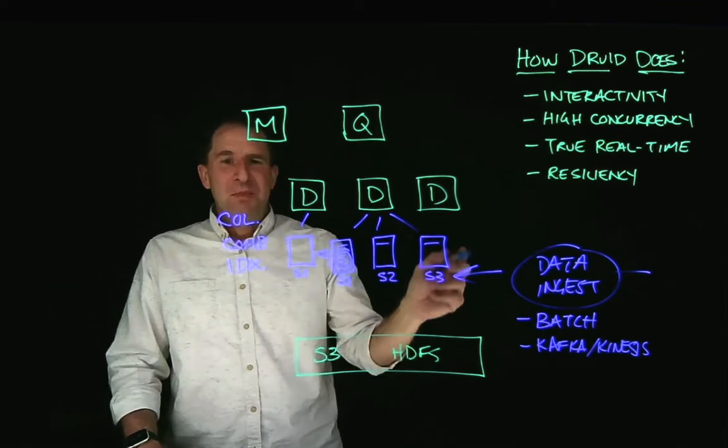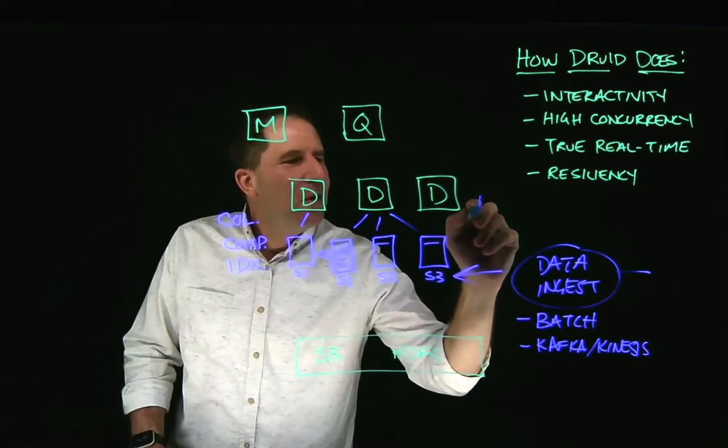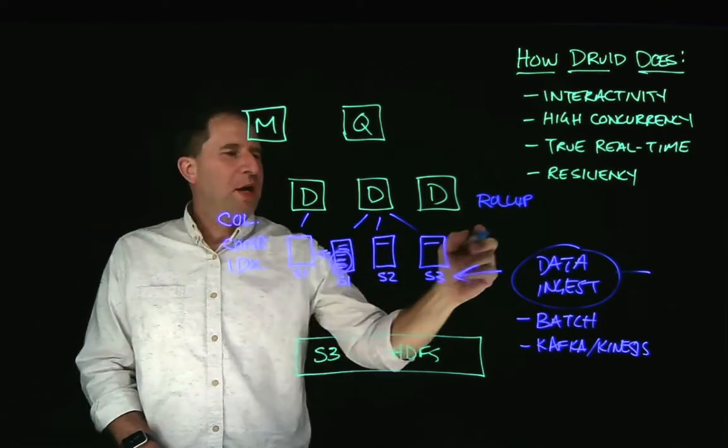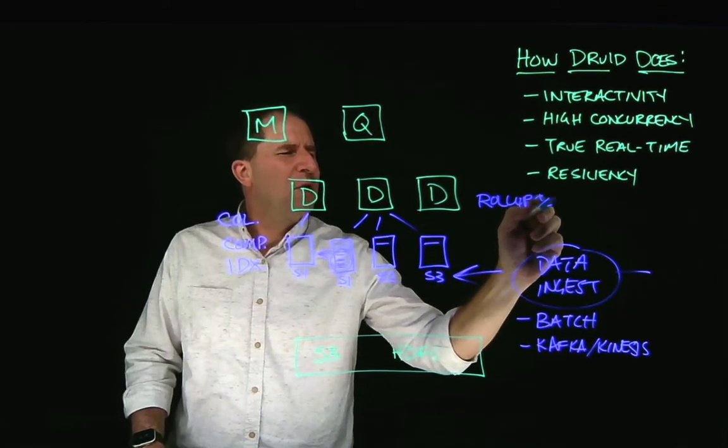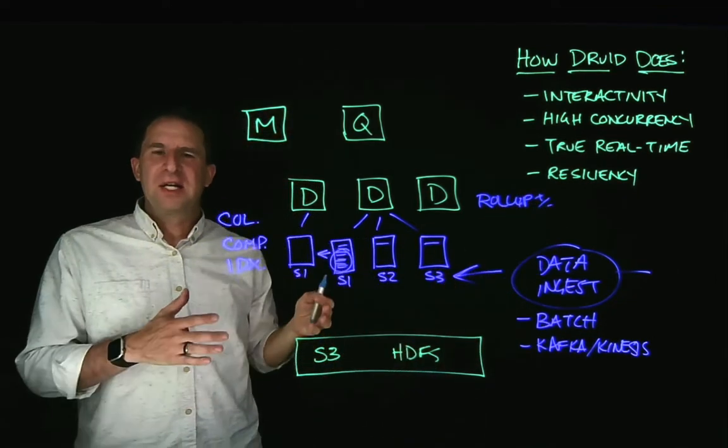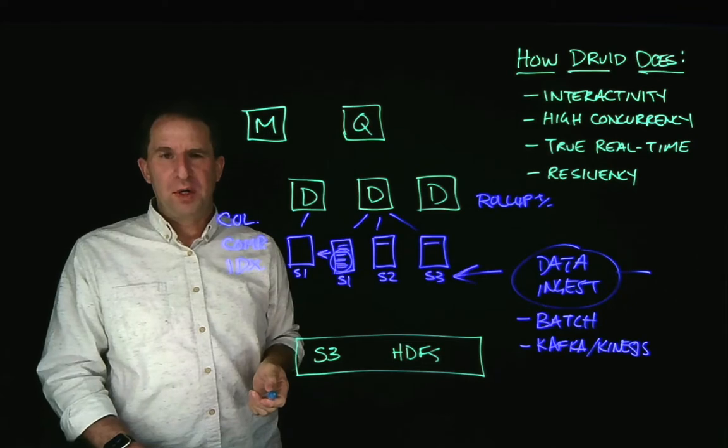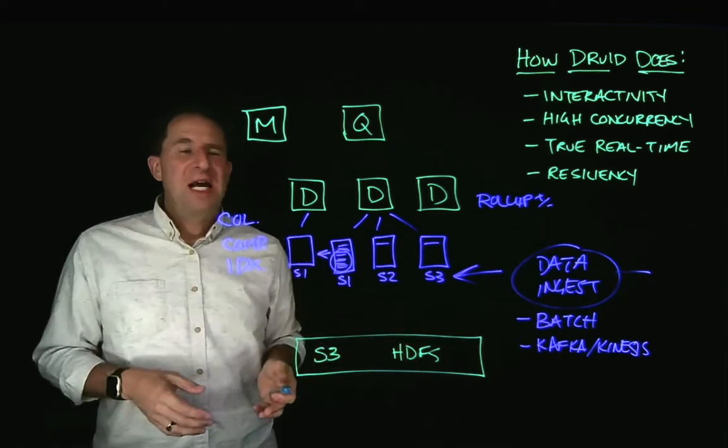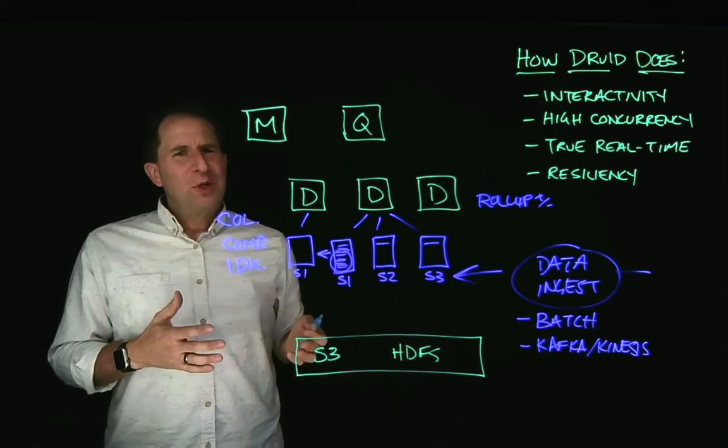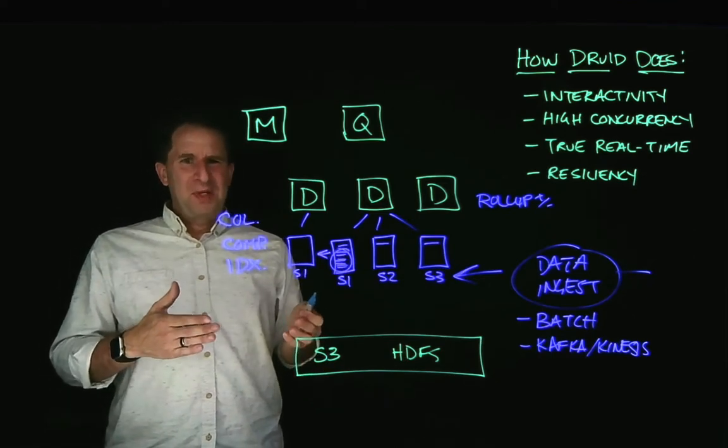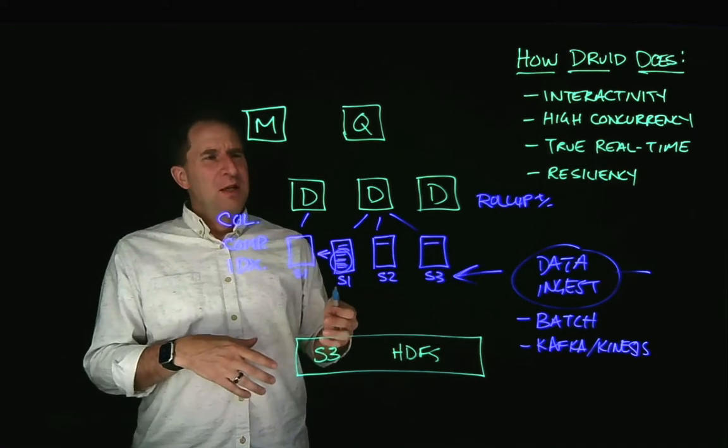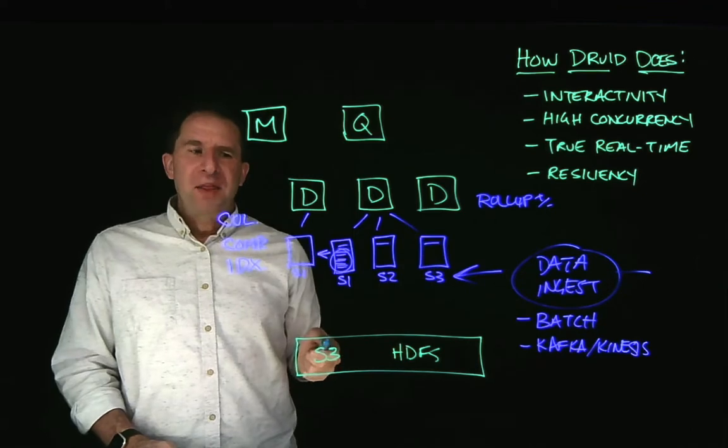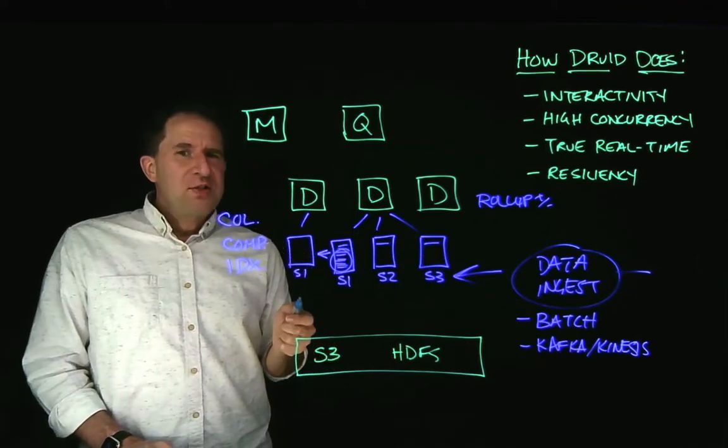Now, when data comes in, you can also optionally do a rollup on it. And a rollup is just a mathematical operator that aggregates data, summarizes it for you. For example, let's say you have a website where you have events coming in through Kafka every second. But you really don't need to report on something that happens every second. Maybe you only need to report by the minute or maybe by the hour. You could roll that up by the minute.